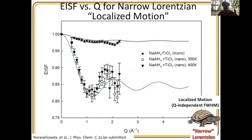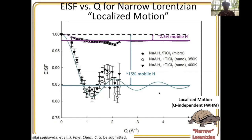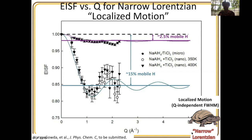Looking at the EISF: the first dataset is our micron-size, titanium-doped sodium aluminum hydride. We see the EISF drop off and level out, giving a percent mobile hydrogen of around two and a half percent. When we look at the nano-confined and doped samples, we see leveling off at about 15% mobile hydrogen. So we go from two and a half percent mobile hydrogen in the micron-scale doped material to about 15% mobile hydrogen in the nano-confined and doped material, specifically in the slower, localized motion.